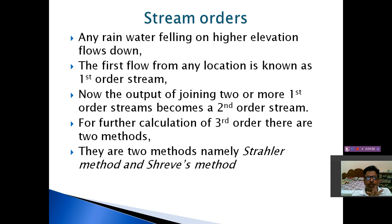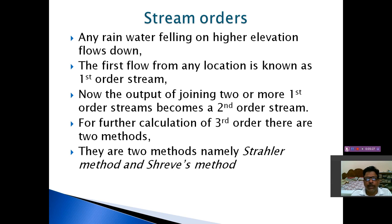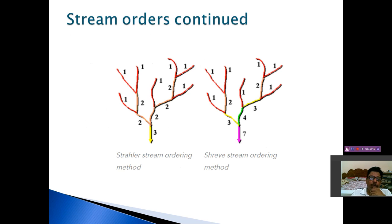I will explain a little about stream orders. Some people asked: what are stream orders and why are we concerned about streams? If you have gone to Gangotri or Yamunotri, the starting originating point of any stream is known as the first order stream. There can be thousands or lakhs of first order streams. Some first orders will join and make a second order. Some second orders will make a third order, and two third orders will make a fourth order. There are two main methods people follow: Strahler's method and Shreve's method.